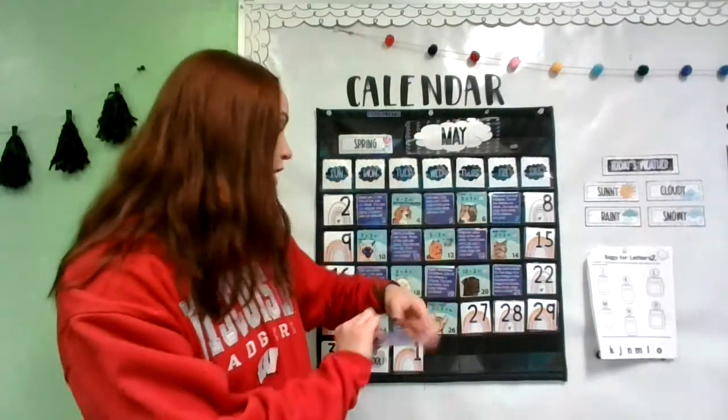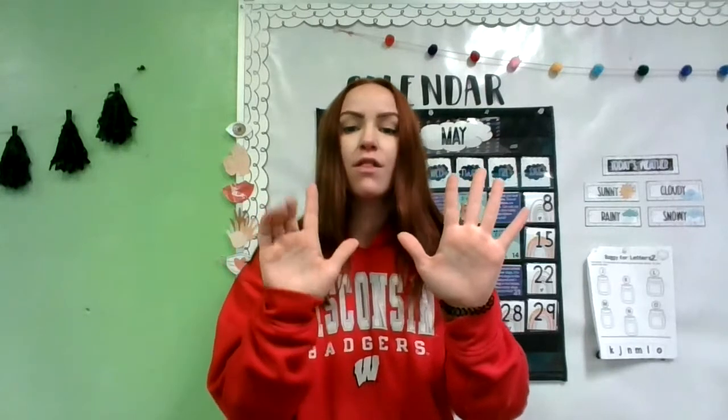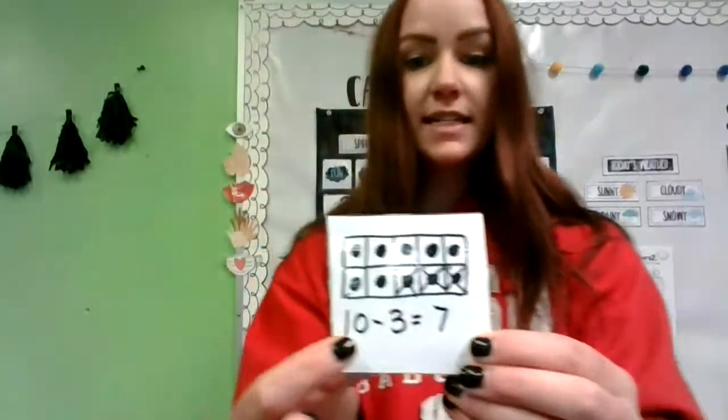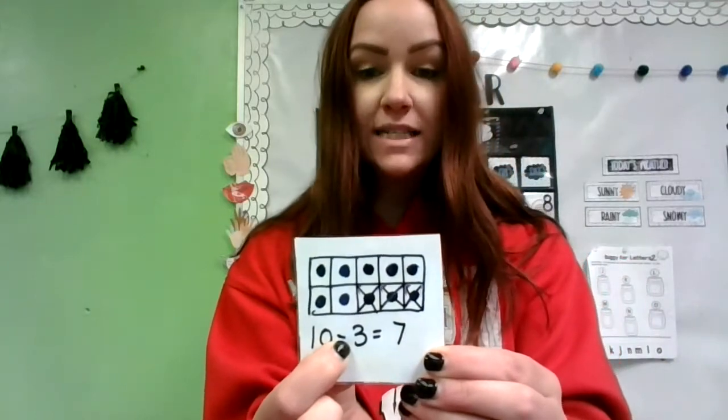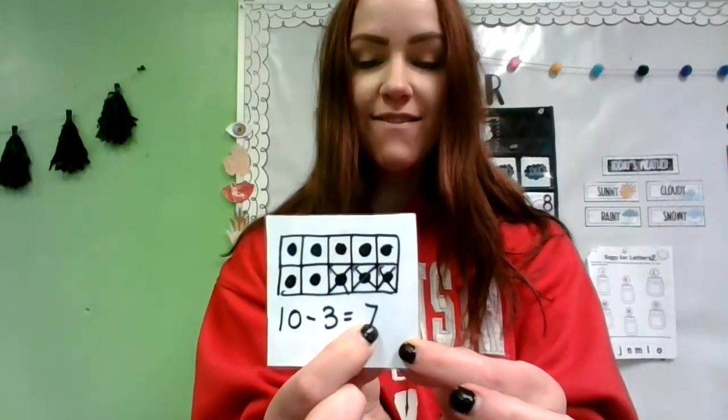Our kindergarten number story says: Poppy's cat has ten mice. Three of them ran away, which means we have to take away three of them — take away, minus, or subtract three mice. They ran away from Poppy's cat. How many mice are left? Let's see: five, six, seven mice are left for Poppy's cat. So our math sentence will say ten mice to start, minus or take away, subtract three of them that ran away, is equal to or the same as seven.